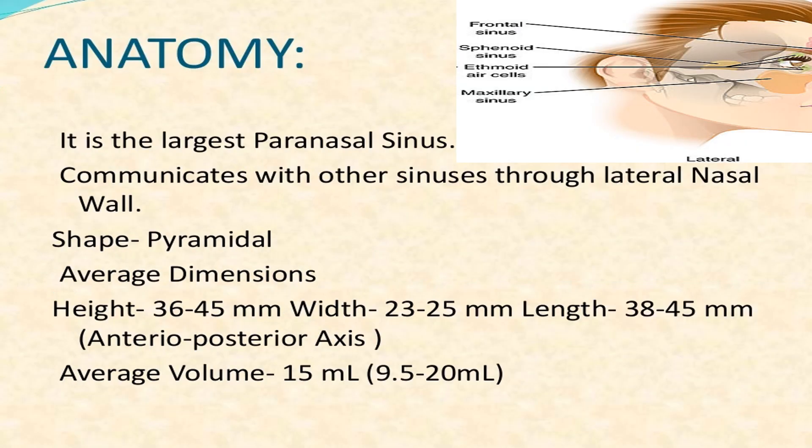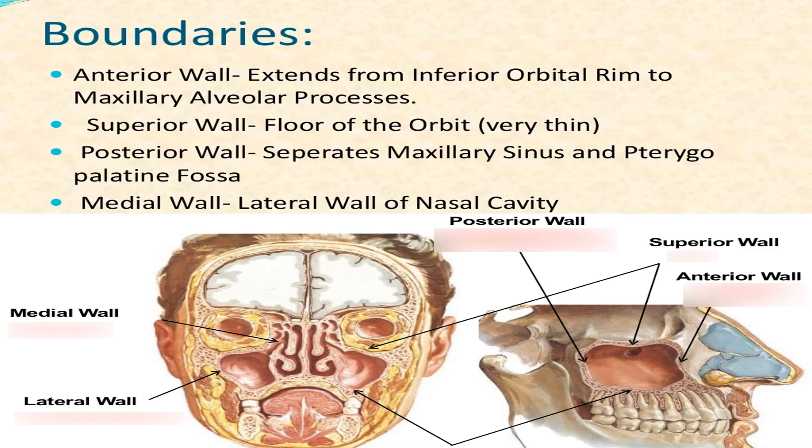The maxillary sinus is the largest paranasal sinus. It communicates with other sinuses through the lateral nasal wall and is pyramidal in shape. Average dimensions: Height 36–45mm, Width 23–25mm, Length 38–45mm (anterior-posterior axis). Average volume is 15ml, ranging from 9.5–20ml.